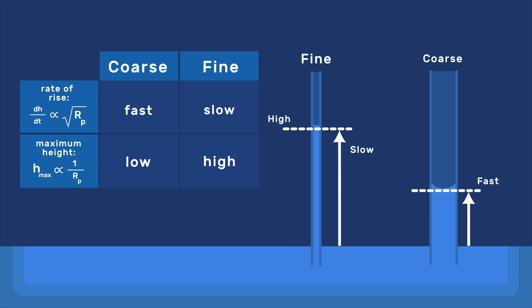At this point, it is important to distinguish the effects of pore size both on the maximum height of capillary rise and on its rate. We have seen that the sorptivity is proportional to the square root of the pore size. So, the rate of rise, dh over dt, is higher for coarse materials than for fine ones. On the other hand, the maximum height of capillary rise is inversely proportional to the pore size. So, for coarse materials, the maximum height of rise is lower than for fine materials. This means that water rises faster in coarse materials, but cannot go as high.